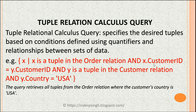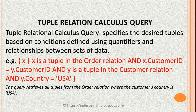Continuing that query: x.customerid equals y.customerid, where y is a tuple in the customer relation — meaning y is a row in the customer table — and the value in the country field of that row is USA. Using relational calculus we declare what we want without specifying the steps.